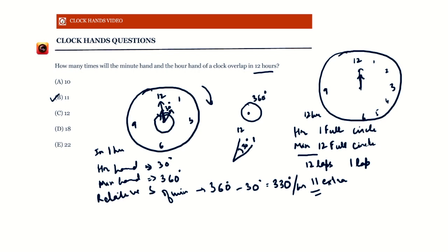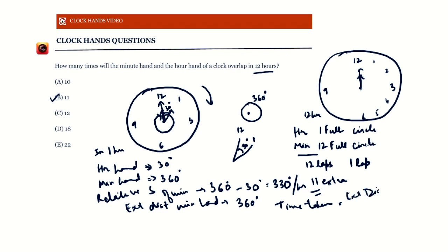For the two hands to meet, the minute hand has to cover one complete circle more than the hour hand — that's our circular motion concept. So the extra distance the minute hand must cover is 360 degrees. The time taken to cover this extra distance is simply the extra distance divided by the relative speed: 360 divided by 330.